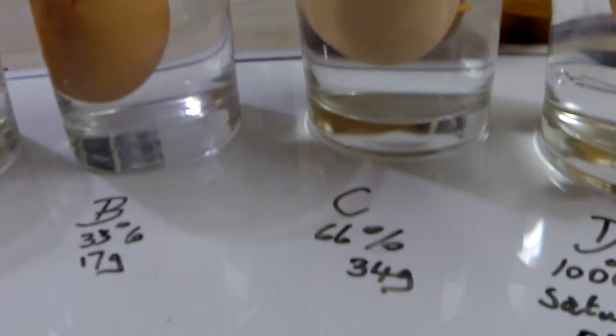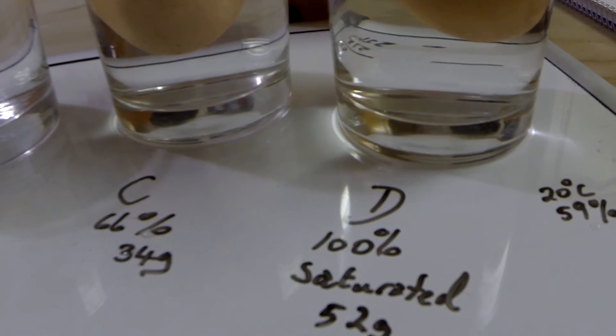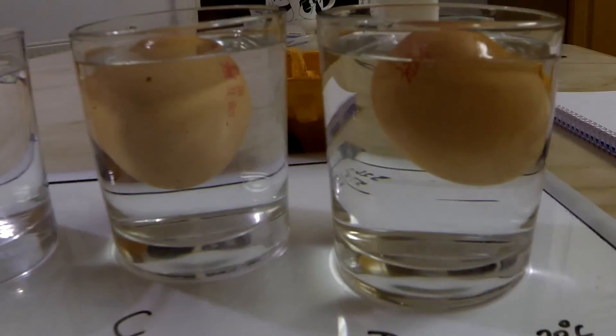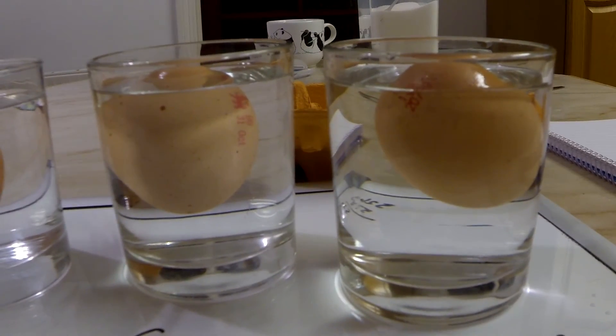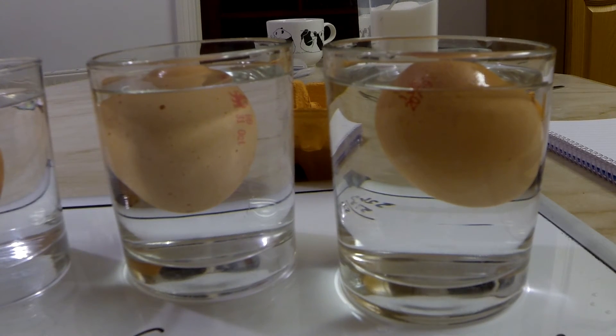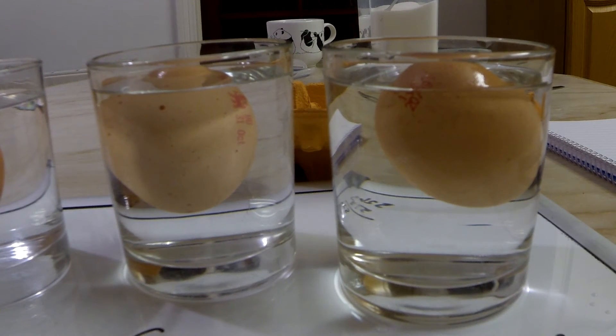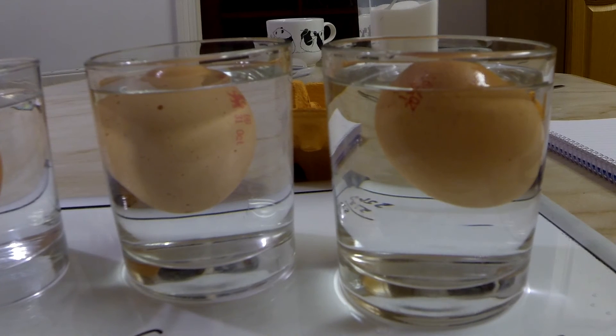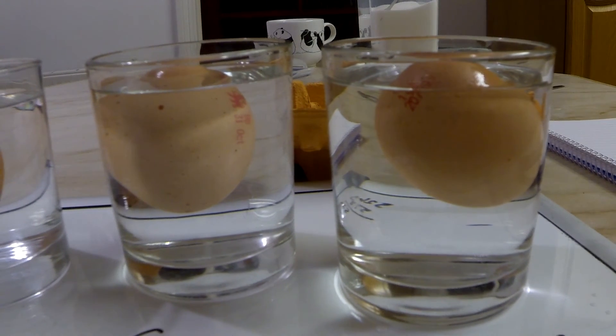And then going on to D, which is the saturated glass. And you can see that with D, the egg is floating even more above the surface. There's quite a bit more poking up above the surface. So I think that's pretty conclusive here.